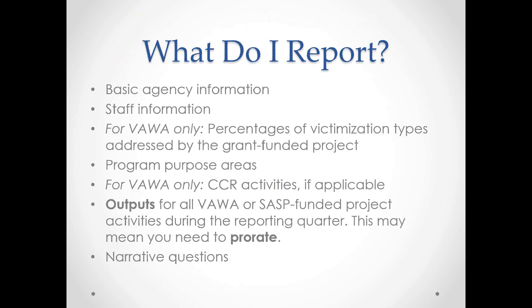What do you report on this form? The first section is basic agency information such as your agency's name and subgrant number. The next is staff information. For VAWA only, you'll report the percentage of victimization types addressed by the grant-funded project — domestic and dating violence, sexual assault, and stalking. You'll also complete the program purpose areas specific to the use of your VAWA grant funds, and if applicable, the section on coordinated community response activities. In the victim services section, you'll enter data on your output — all your VAWA-funded project activities during the reporting period — and you may need to prorate your data.